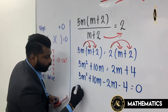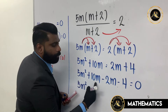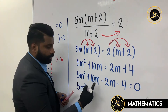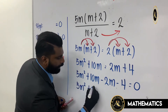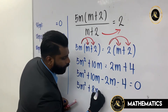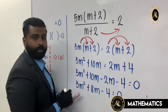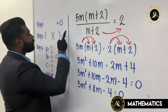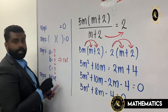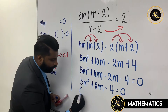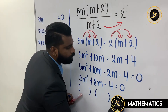5m squared has no partner, so we solve. 10m minus 2m becomes 8m. So we get: 5m squared plus 8m minus 4 equals to zero. The equation is now equal to zero. Step number two: put into two brackets equal to zero.